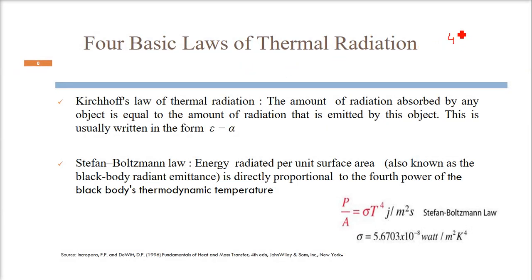There are four basic laws which are employed. First is the Kirchhoff law of thermal radiation. This means that the amount of radiation being absorbed by any object is equal to the amount of radiation that is emitted by that object, written as epsilon equal to alpha. The Stefan-Boltzmann law: simply, the energy is directly proportional to the power of temperature four. Energy radiated per unit surface area, also known as the black body radiant emittance, is directly proportional to the fourth power of the temperature, that is the black body thermodynamic temperature. When you replace this proportionality sign, you have a constant which is called the Stefan-Boltzmann law, and this sigma is the constant we use here.